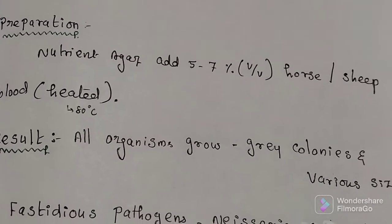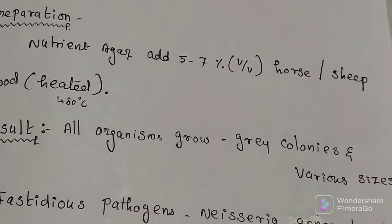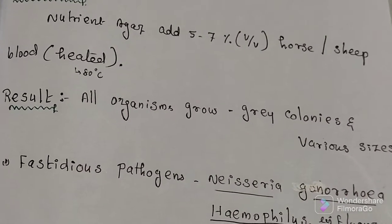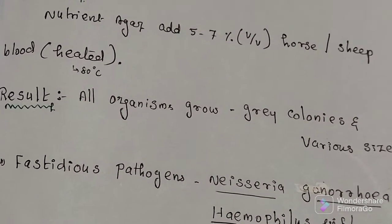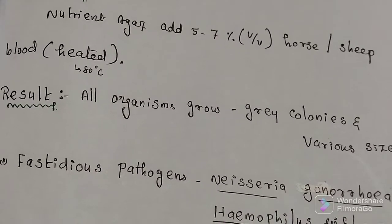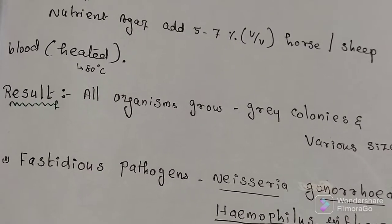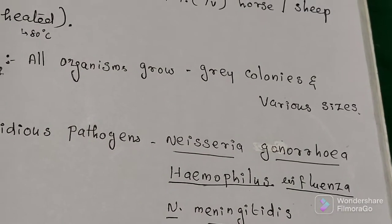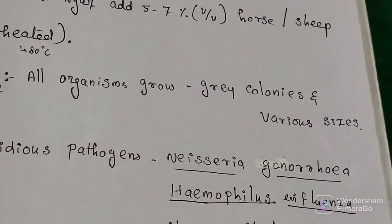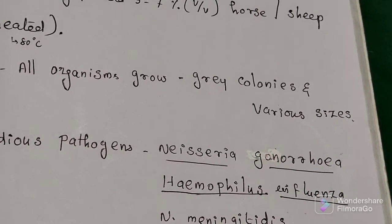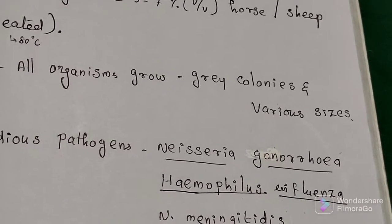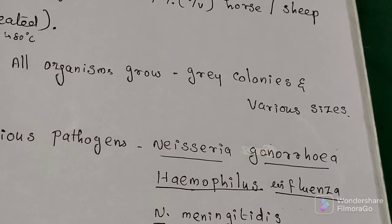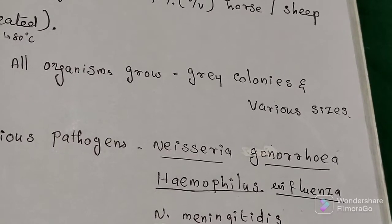Almost all organisms grow on chocolate agar giving gray colonies of various sizes. However, since it is used to isolate fastidious organism pathogens such as Neisseria gonorrhoeae, Haemophilus influenzae, and Neisseria meningitidis, these produce grayish color, non-hemolytic colonies.